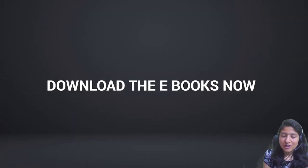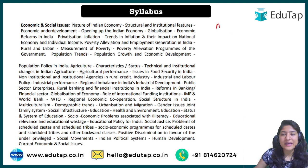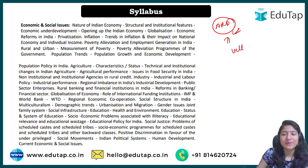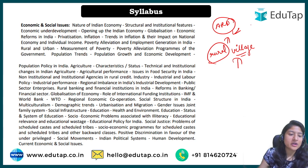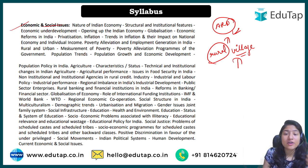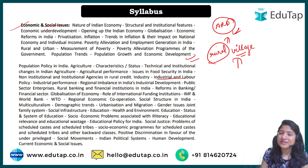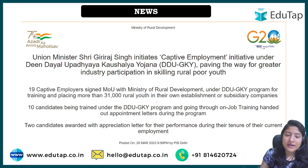From the syllabus perspective, this scheme is important under the ARD component since we are talking about the grameen — meaning rural — region. It is also relevant for Economic and Social Issues because it covers employment generation, industrial and labor policy. It is more important from the ARD component, but relevant from ESI as well.